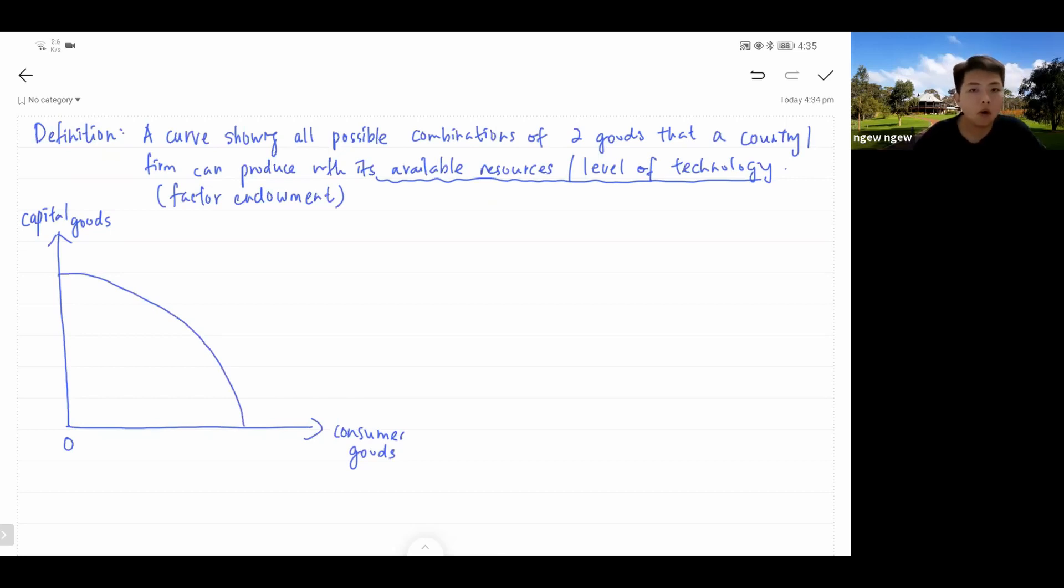And this is your PPC shape. It shows all the possible combinations of two goods that your country or firms can produce with their resources. Maybe combination A, maybe combination B, C, D, E, or maybe F. With all your resources fully utilized, these are the combinations that you can produce. You can produce, like, maybe 20 units of consumer goods with 100 units of capital goods.